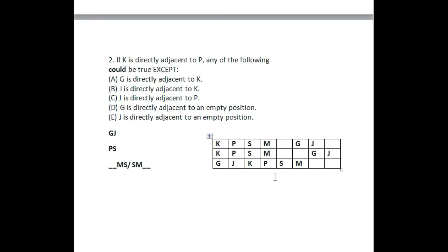If K is directly adjacent to P, any of the following could be true, except one. If J is the answer, then consider that one thing happened — that one condition is satisfied.